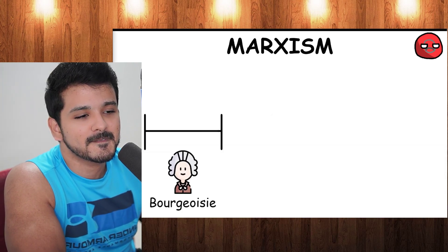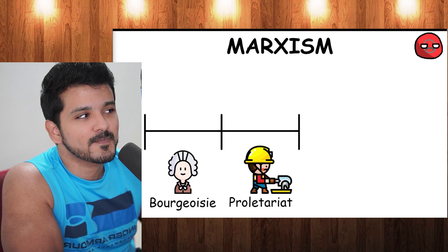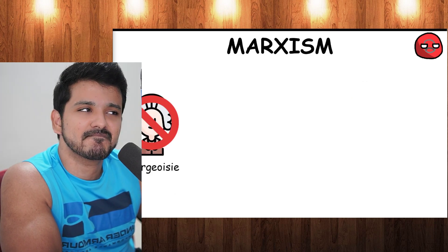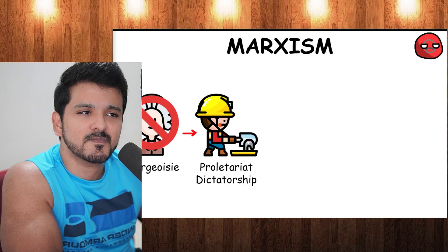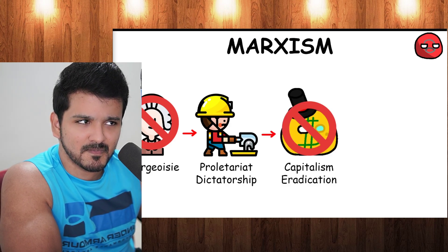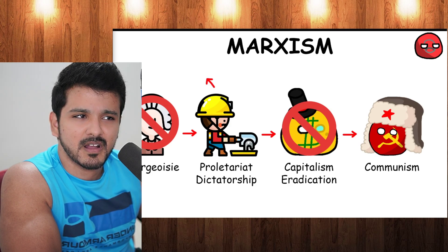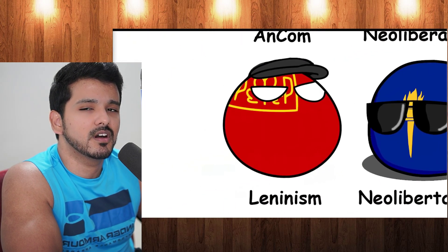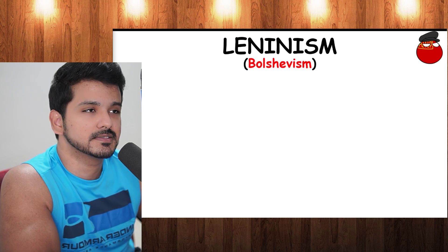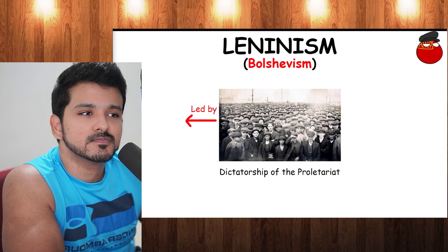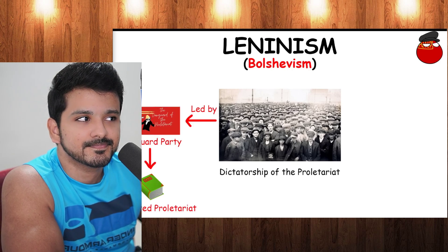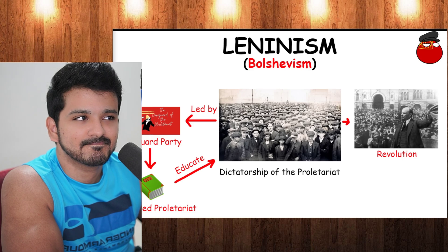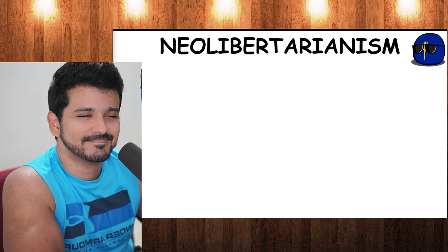Marxism believes that history can be viewed in stages of development based on which class holds a dictatorship over others, and that today the world is under the dictatorship of the bourgeoisie. Following the overthrow of the bourgeoisie, Marxism believes a dictatorship of the proletariat must be established to eradicate capitalism and begin the transition to communism — a stage where the working class has absolute power and ownership of the means of production, usually called socialism. Leninism, also known as Bolshevism, believes in establishing a dictatorship of the proletariat led by a revolutionary vanguard party composed of the most educated workers, with the objective of educating larger sections of the working class and starting the revolution.